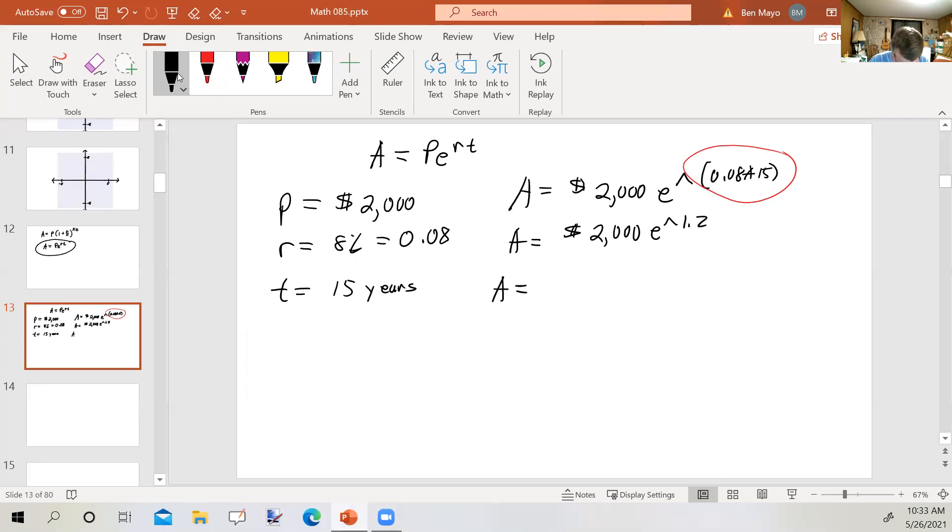So the accumulated amount will be $2,000 times e raised to the 0.08 times 15 power. 0.08 times 15 is 1.2. In my calculator, I'm going to put in 2000, then go second function key, push the ln or natural log button, which gives me e to the, and then I'll put 1.2 in that parentheses, push equals. I get $6,640.233845. Because we're dealing with money, we round to the nearest cent, which is $6,640.23.